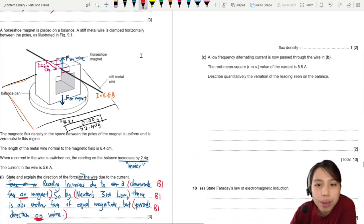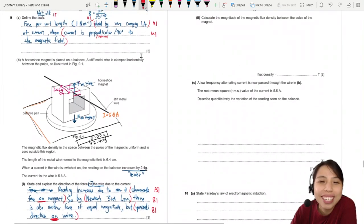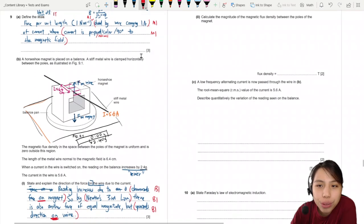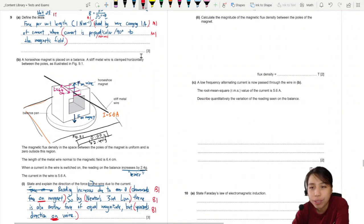Okay. Then, what do we need to do now? Calculate, right? Oh, here we go. Okay. So, calculate the magnitude of magnetic flux density between the poles of the magnet.